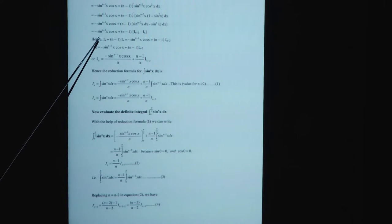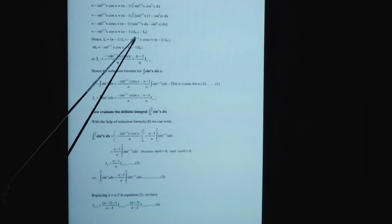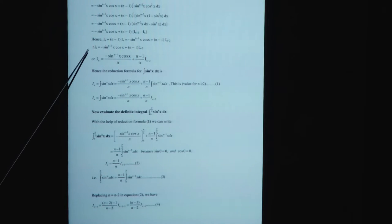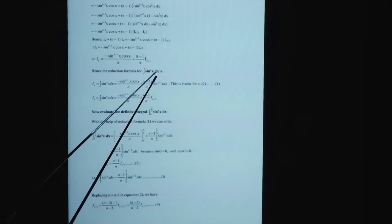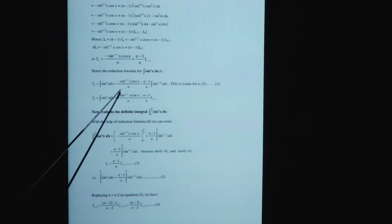Solving, I_n = -sin^(n-1)(x) cos(x) + (n-1) I_(n-2) - (n-1) I_n. Hence, I_n + (n-1) I_n = -sin^(n-1)(x) cos(x) + (n-1) I_(n-2), which gives: n I_n = -sin^(n-1)(x) cos(x) + (n-1) I_(n-2). Therefore, the reduction formula for integration of sin^n(x) dx is: I_n = -sin^(n-1)(x) cos(x) / n + (n-1)/n times integration of sin^(n-2)(x) dx. This is valid for n > 2.